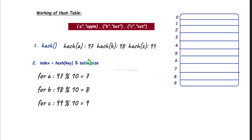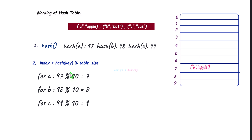In the hash table, key-value pairs are stored in an array of buckets, and each index is called a bucket. For this key-value pair we got the index as 7, so we will store it there. For B we get index 8 and store that. For C we get index 9 and store that. If two different keys have the same index, that is called a collision, and to solve this collision problem you can use either the chaining method or open addressing — we will talk about that in the next tutorial.